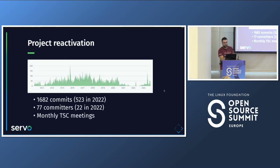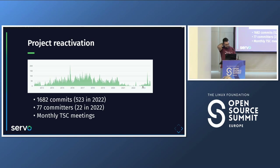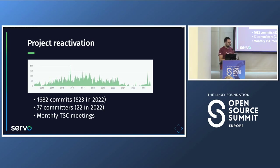Project reactivation was one of our goals. You can see clearly in the Igalia stats the gap from mid-2020, when Mozilla laid off the team, until almost the end of last year when we started working. Commits are already three times the number from all of last year, and we still have the last quarter. External contributors are coming back to the project. Apart from the technical part, we're also reactivating governance — the Technical Steering Committee was meeting very infrequently (just once in 2022), and we're now doing monthly meetings, though we skipped summer in Northern Europe.